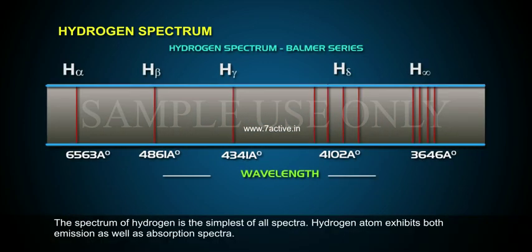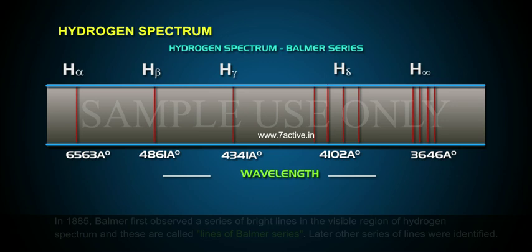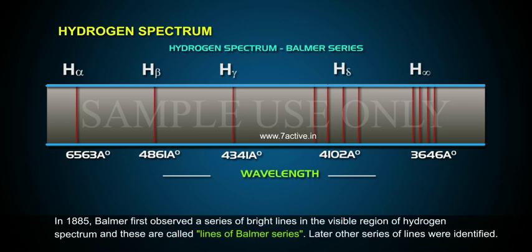Hydrogen Spectrum: The hydrogen atom exhibits both emission as well as absorption spectra. In 1885, Balmer first observed a series of bright lines in the visible region of the hydrogen spectrum, and these are called the lines of the Balmer series.